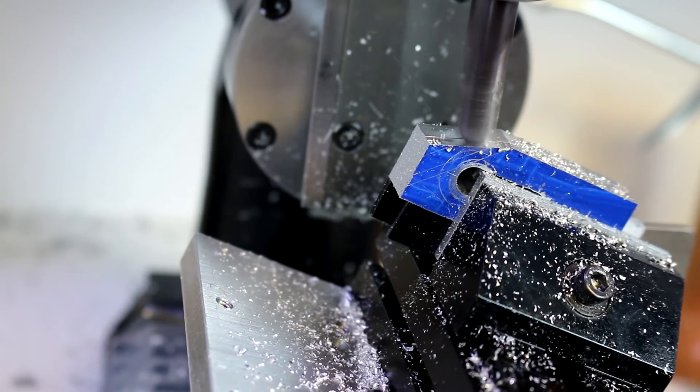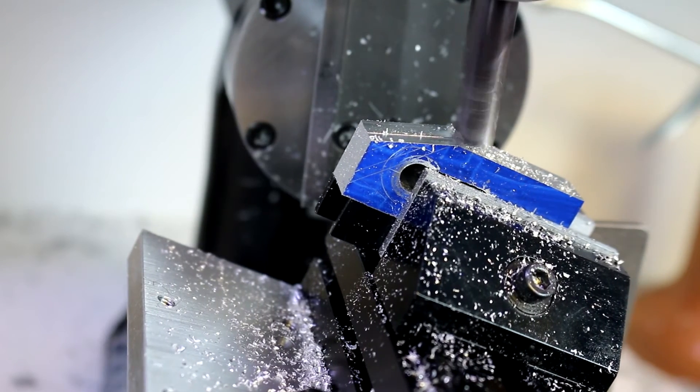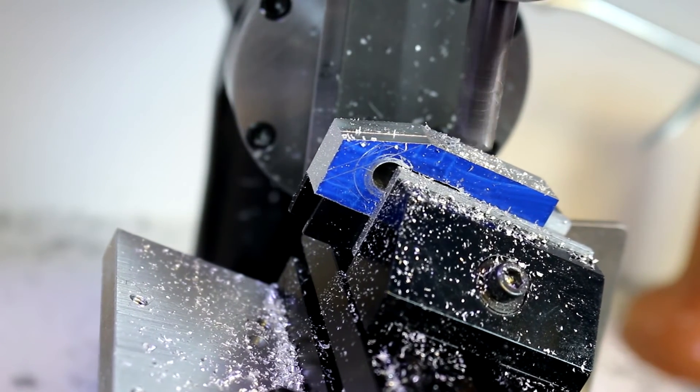This is another example of where having a band saw, you could help rough out this piece so that you don't have to shave off as much.